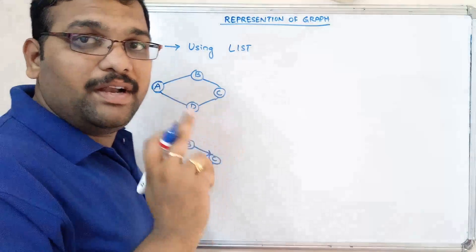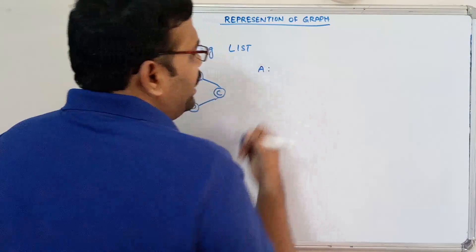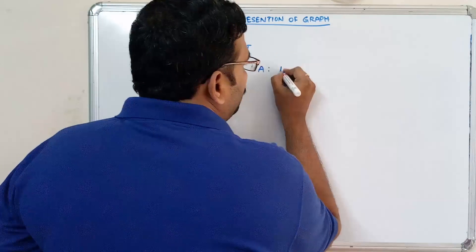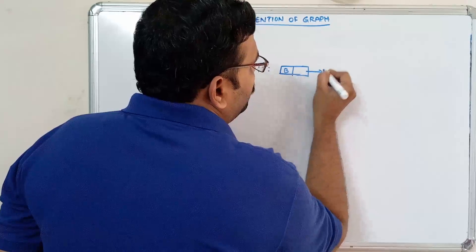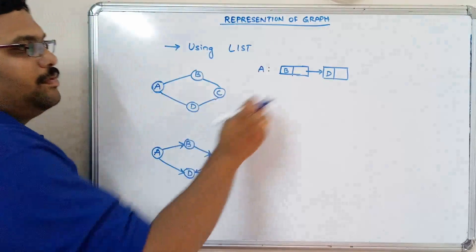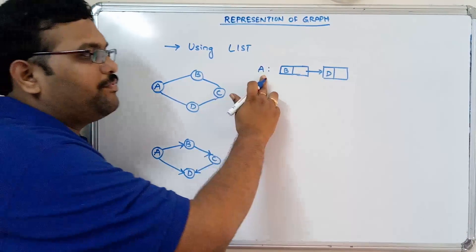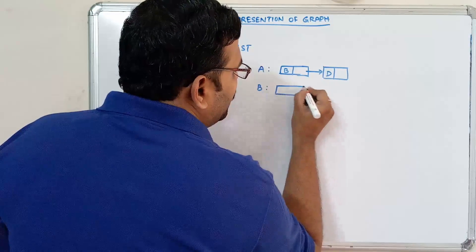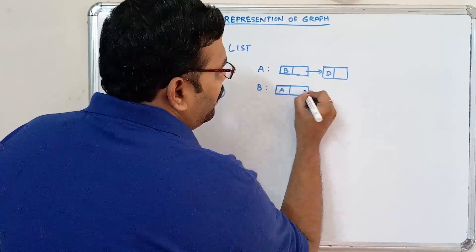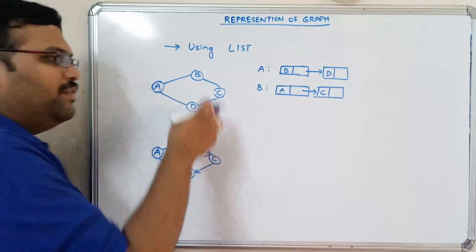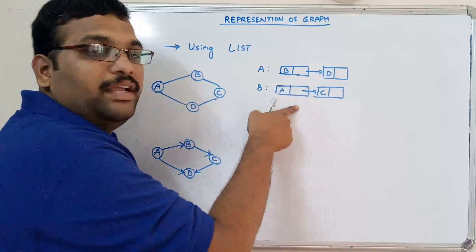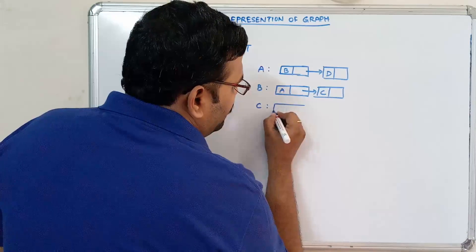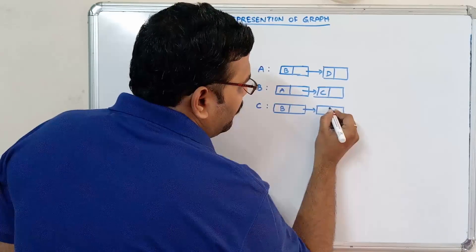We know that every node will have two fields — one is the data field and another one is the link. For example, consider node A. A is having two connected nodes: B and D. So we can represent it as A pointing to B, and B again points to D. Similarly, coming to node B — B is also having two nodes: A and C, so A connecting to C. And C is also having two nodes, B and D.